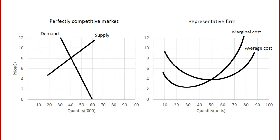Because this is a perfectly competitive market, we're assuming that the firms in this market, including this one, are price takers. They simply accept whatever the market price is because they have no market power and no capacity to influence the market price. The market price is the equilibrium price — the point at which quantity demanded equals quantity supplied — and that's $8. Because this firm and all the other firms are price takers, that price of $8 remains unchanged irrespective of how much this firm produces.